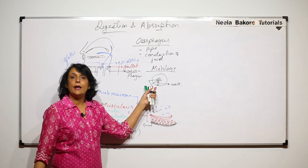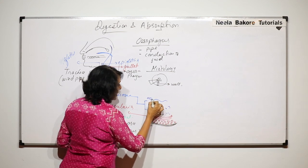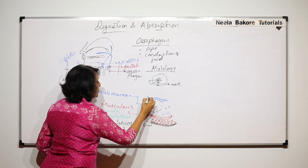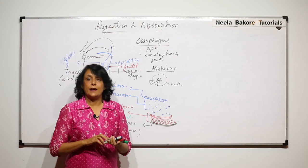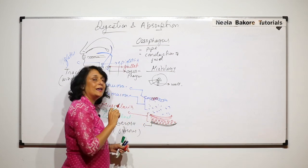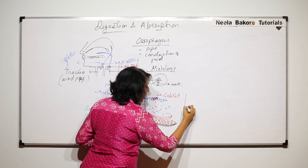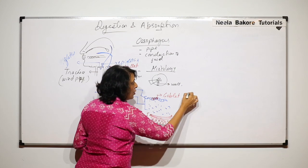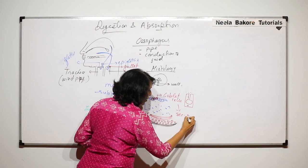The fourth layer is the mucosa. For the esophagus, the mucosa contains a special type of cell — goblet cells. These are columnar cells with a swollen part that secretes mucus. So goblet cells are responsible for the secretion of mucus in the esophagus.